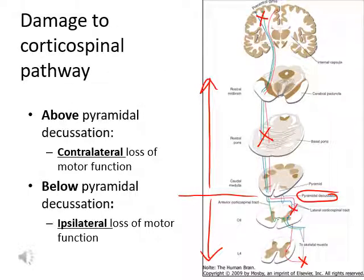Regarding damage to the corticospinal pathway: if damage happens above the pyramidal decussation, since the cross has not yet happened, the loss of motor function will occur on the contralateral side. If spinal cord injury happens below the pyramidal decussation, the loss of motor function will occur on the ipsilateral side.